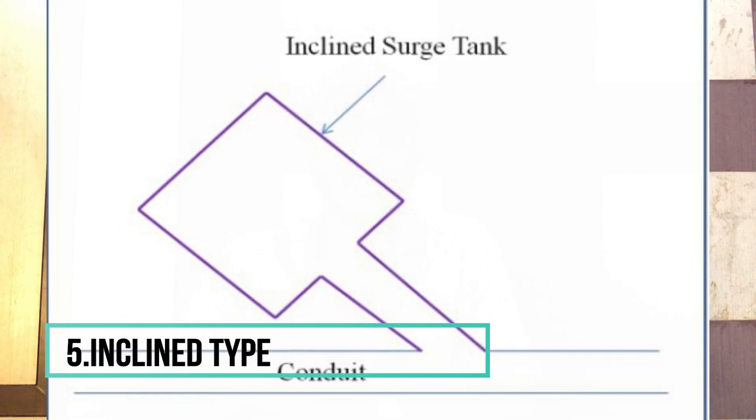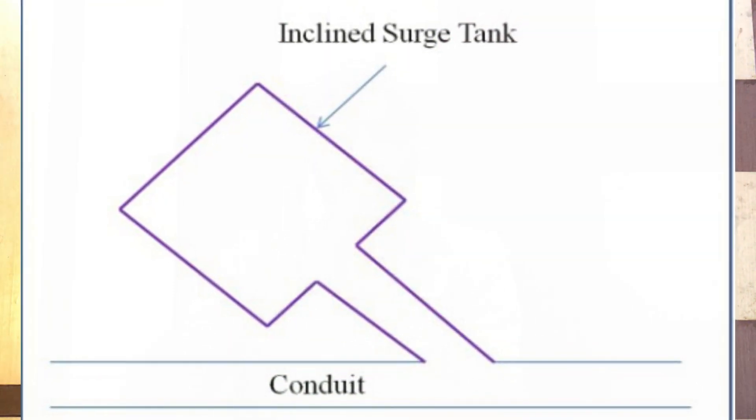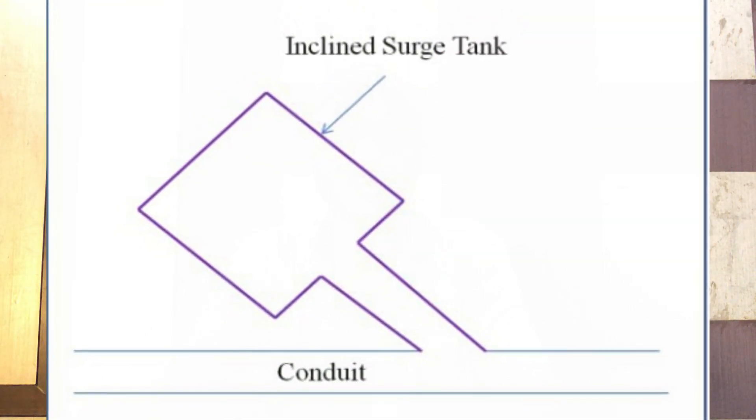The fifth type is the inclined type of surge tank. We use it when there are height issues — we need to normalize the pressure but the space does not allow a vertical tank. So the types of surge tanks are: simple type, restricted orifice type, differential type, gallery type, and inclined type.